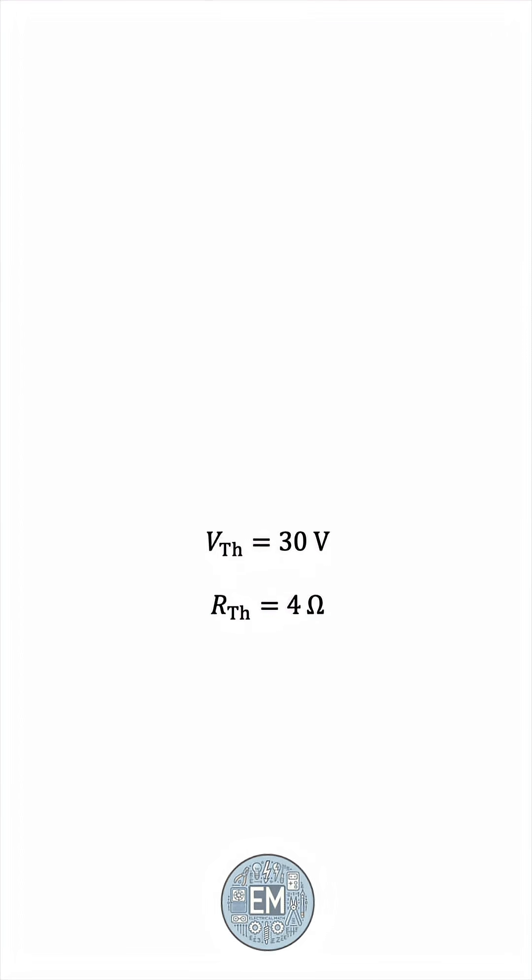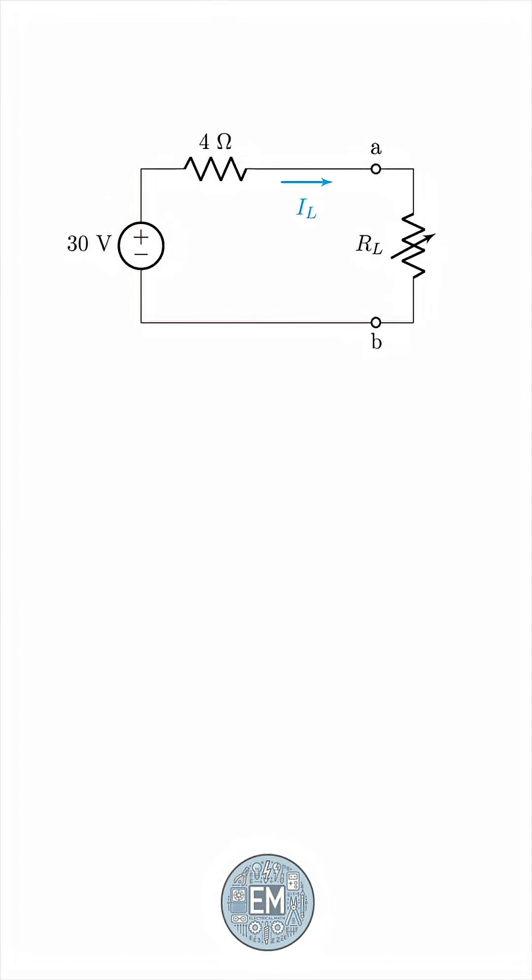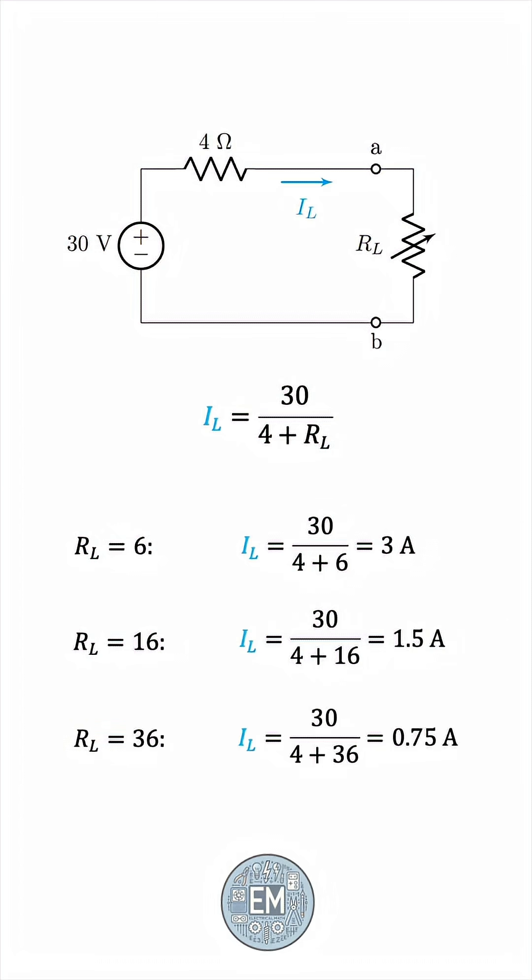With V Thevenin and R Thevenin, we have this Thevenin equivalent circuit. So, if we now insert the load resistance RL, we can find the load current IL using a simple formula, voltage over resistance. With this, we can find the load current for any load resistor value, and it'll be a walk in the park. Very easy.